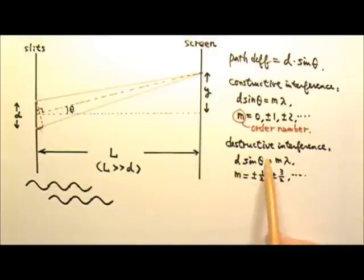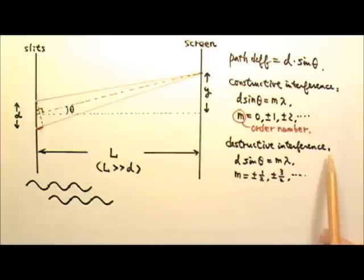If D sine theta equals to half numbers times the wavelength, then we are going to have peak meeting trough, and we get destructive interference, which means on the screen we would see dark fringes.